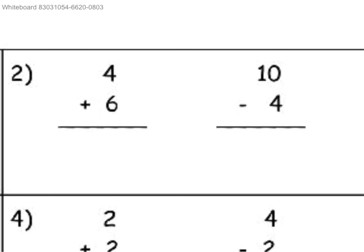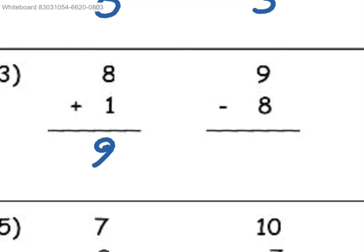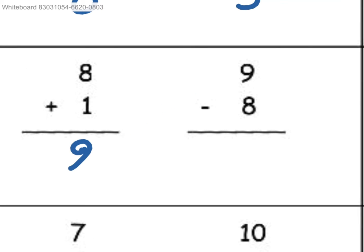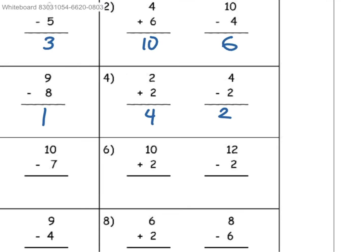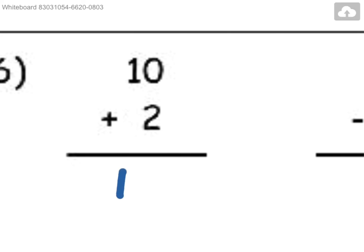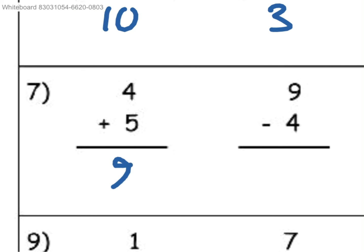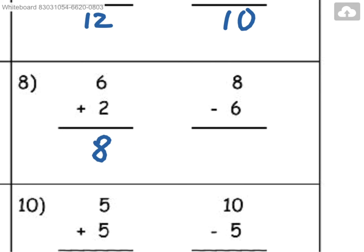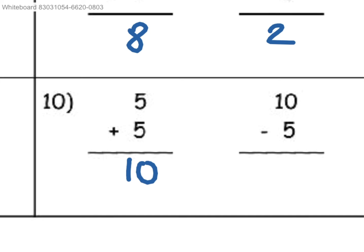4 plus 6 adds up to the number 10, and then 10 minus 4 would equal 6. 8 plus 1 adds to 9, and then 9 minus 8 is equal to 1. 2 plus 2 adds to 4, and then 4 minus 2 equals 2. 7 plus 3 is 10, and then 10 minus 7 is 3. 10 plus 2 is 12, and 12 minus 2 is 10. 4 plus 5 is 9, and then 9 minus 4 is 5. 6 plus 2 is 8, and then 8 minus 6 is 2. 1 plus 6 is 7, and 7 minus 6 is 1. 5 plus 5 adds up to 10, and 10 minus 5 would equal 5.